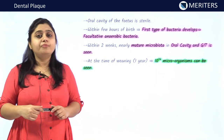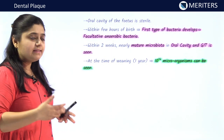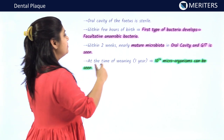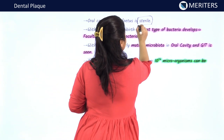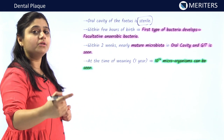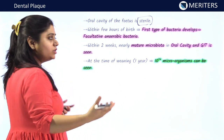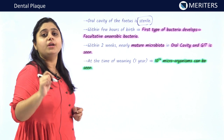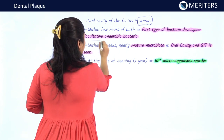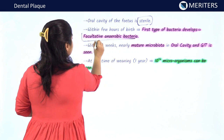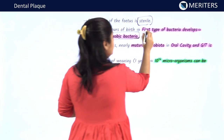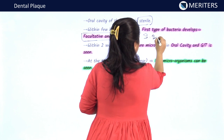At the time of birth, the oral cavity is completely sterile — it does not contain any bacteria. But soon after birth, the first bacteria to develop in the oral cavity are facultative and aerobic bacteria. This is very important to remember, and the bacteria usually found is Streptococcus salivarius.